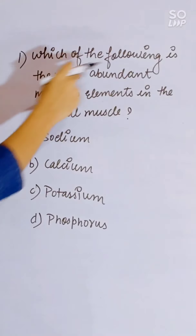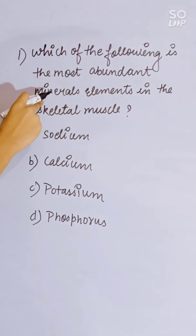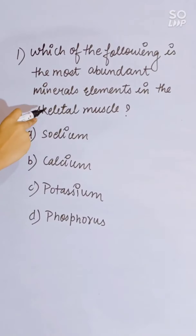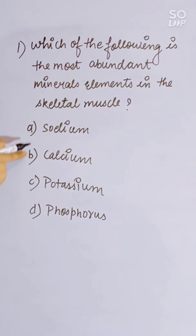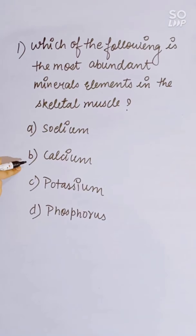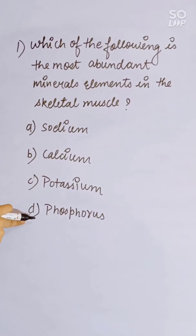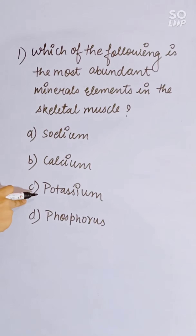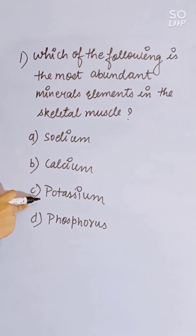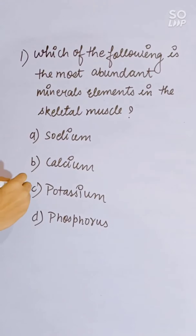Which of the following is the most abundant mineral element in skeletal muscle? Options: sodium, calcium, potassium, or phosphorus. Potassium is the most abundant mineral element in skeletal muscle. Correct answer is C.